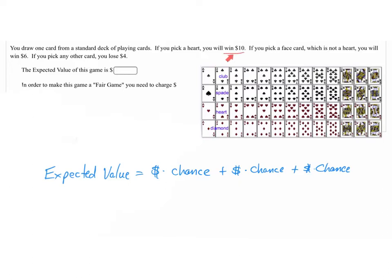In this case, you're going to win $10 if you pick a heart. If you pick a face card that's not a heart, you get $6. And if you pick any other card, you're going to lose money. So there's three different things.